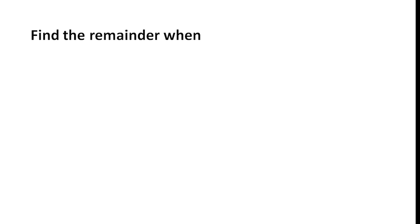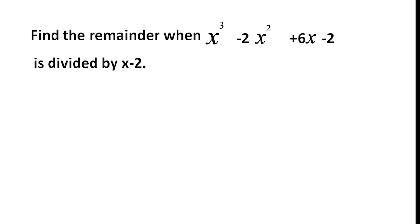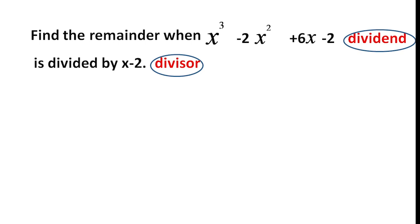Consider an example. Find the remainder when x cubed minus 2x squared plus 6x minus 2 is divided by x minus 2. Here, the dividend is x cubed minus 2x squared plus 6x minus 2, and the divisor is x minus 2.